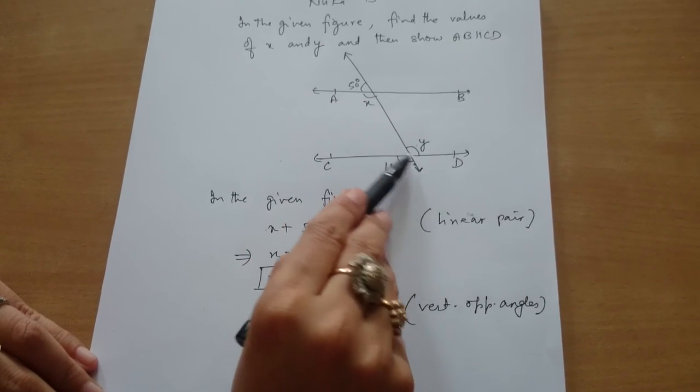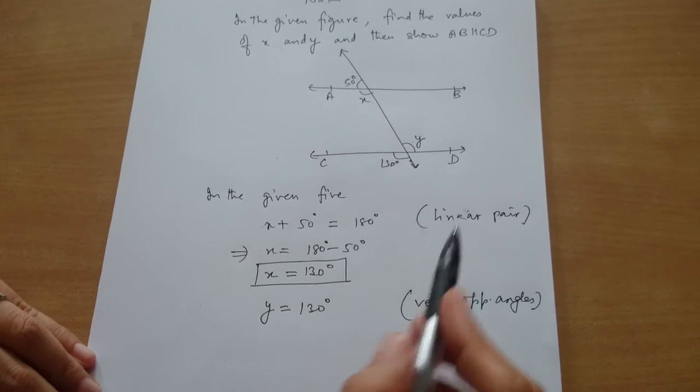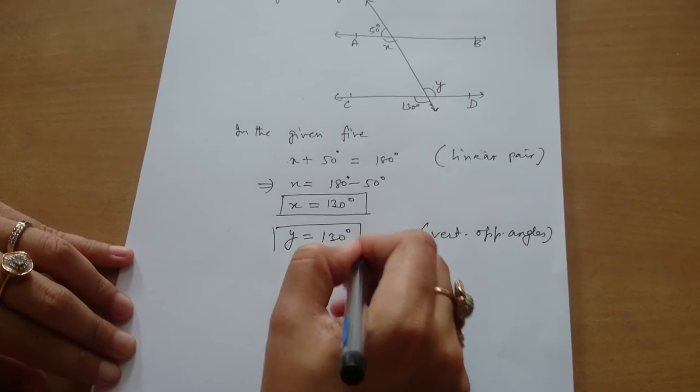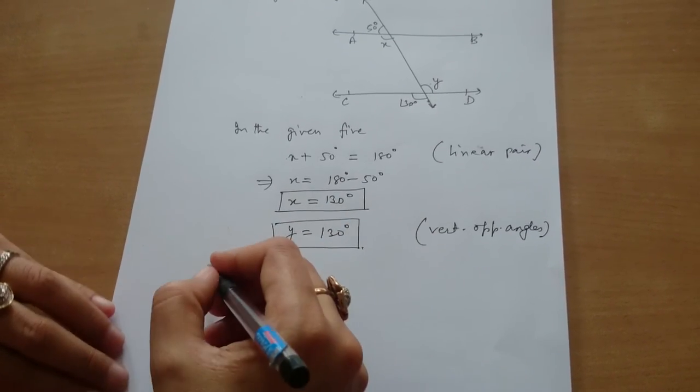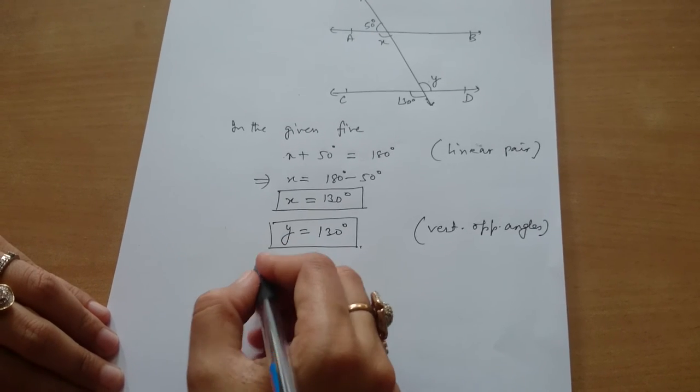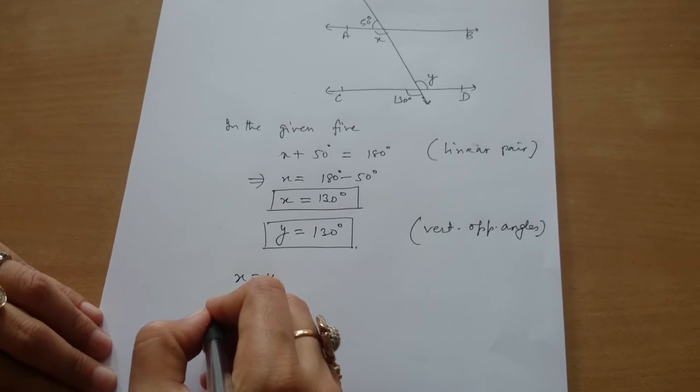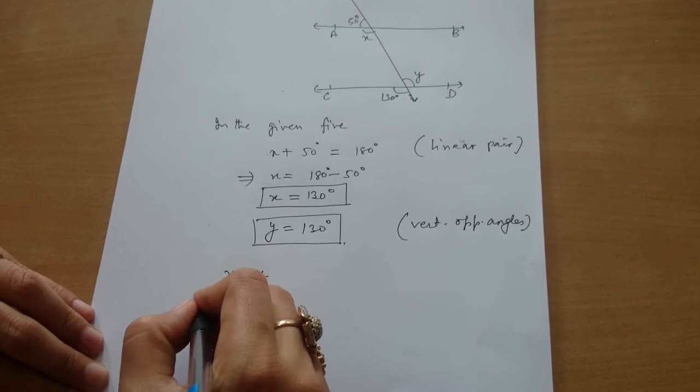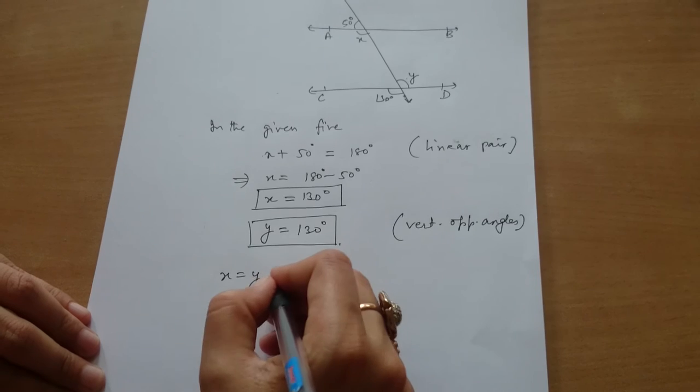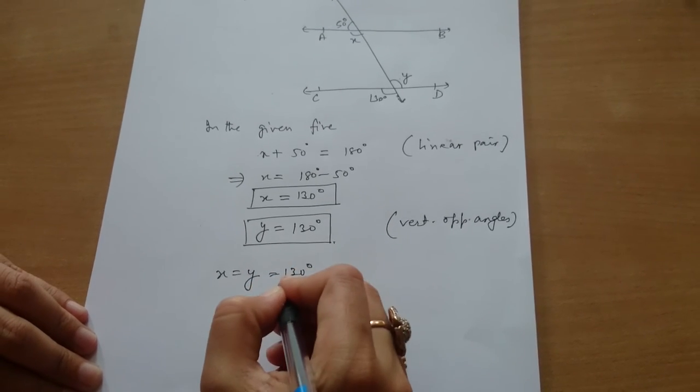Similarly, there is another pair of vertically opposite angles. So Y is 130 degrees. Since X is equal to Y, AB is parallel to CD because they are alternate angles. X equals Y equals 130 degrees each.